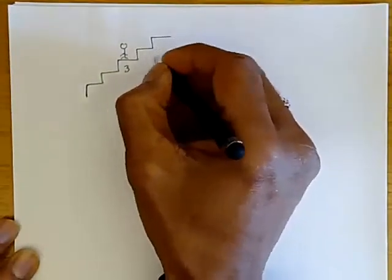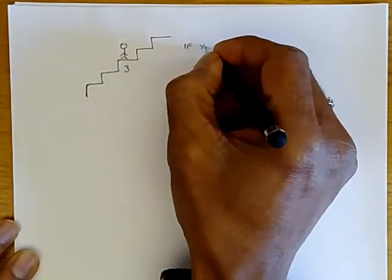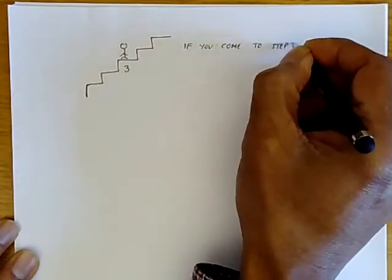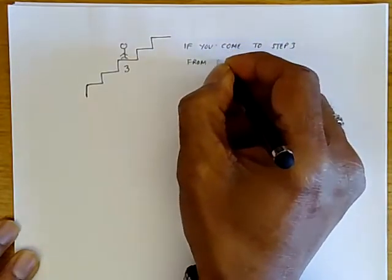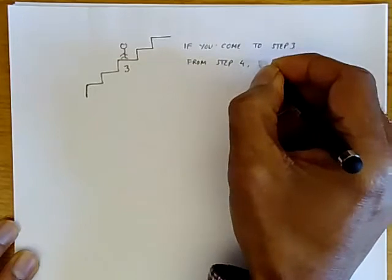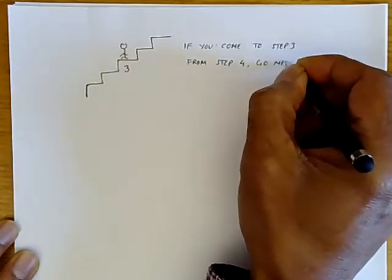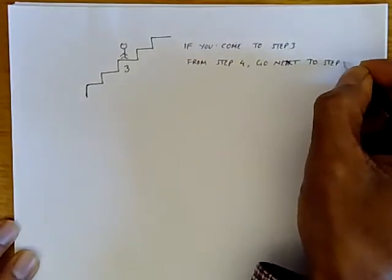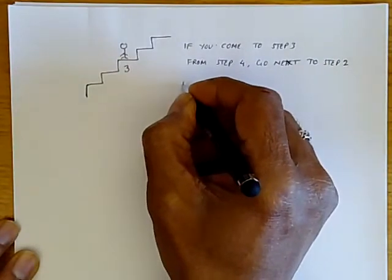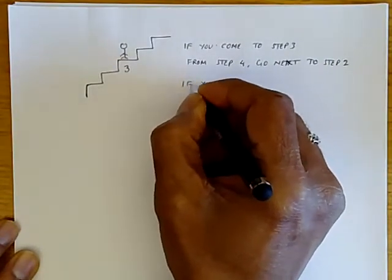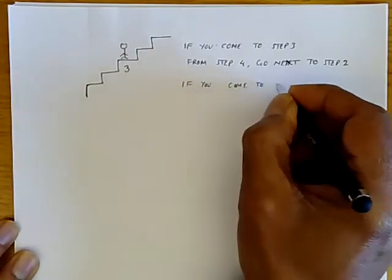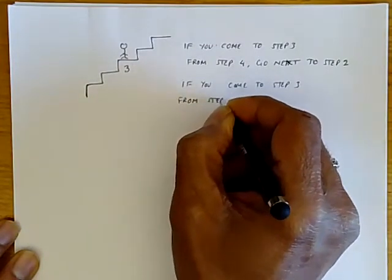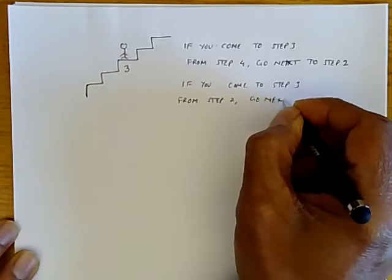We will use the following rule. So we'll say if you come to step three from step four, go next to step two. If you come to step three from step two, go next to step four.